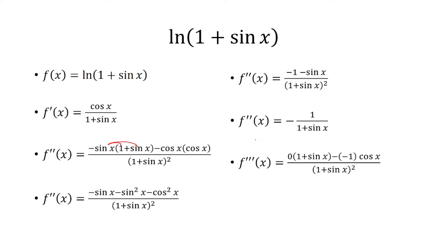Now we take the derivative of negative 1 over (1 + sin x) using the quotient rule. The derivative of 1 is 0 times the bottom, minus the derivative of the bottom, which is cosine, times the top, which is negative 1, over the bottom squared. Simplifying, we get cosine over (1 + sin x) squared.